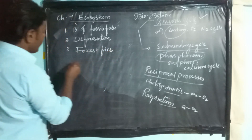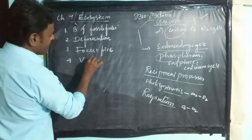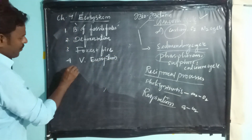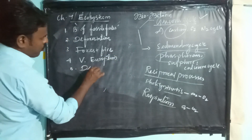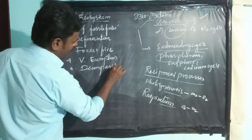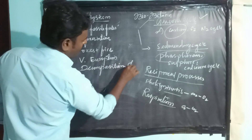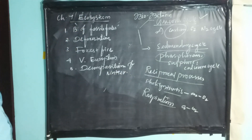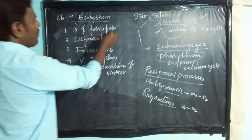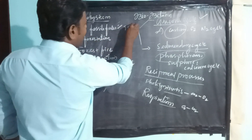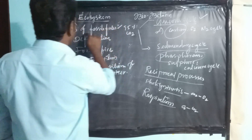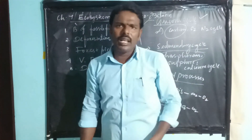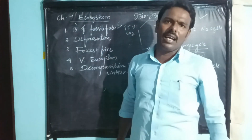The third one is forest fire. The fourth one is volcanic eruption. The fifth one is decomposition of organic matter. The burning of fossil fuels accounts for ninety percent of carbon evolved. For example, petroleum, coal, oil, and gas are burned, releasing carbon.